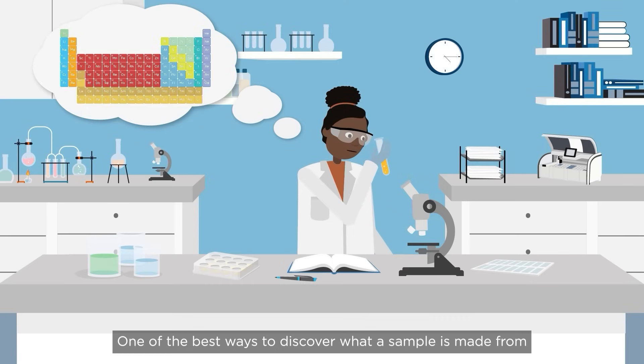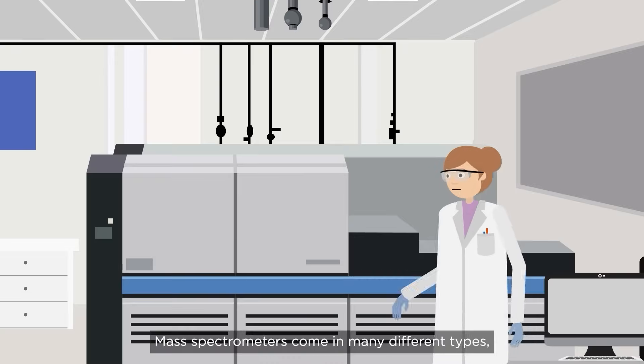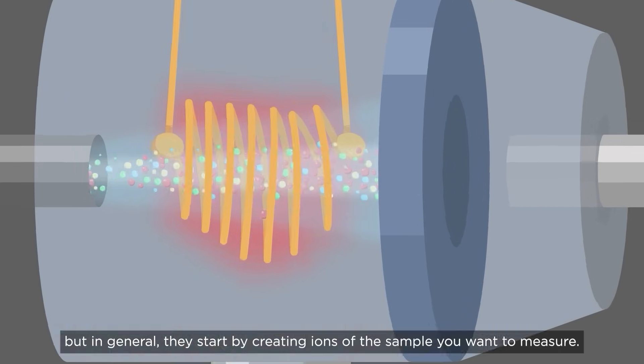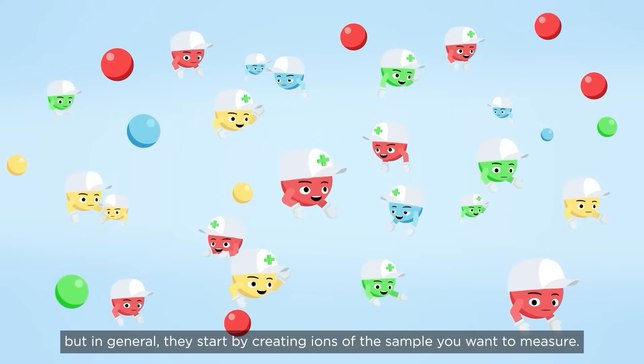One of the best ways to discover what a sample is made from is to use a device known as a mass spectrometer. Mass spectrometers come in many different types, but in general they start by creating ions of the sample you want to measure.